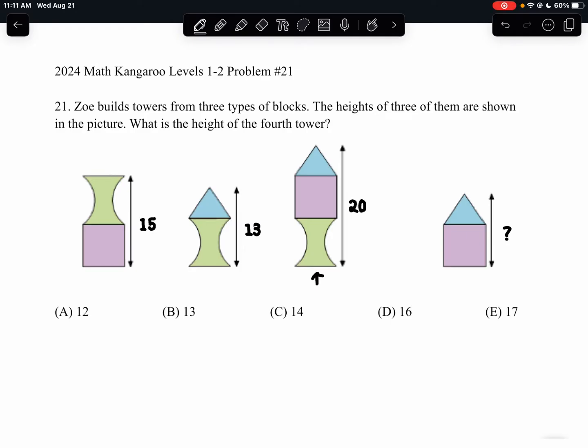For example, if we compare it to the height of the second figure, we see that the difference between these two structures is that one has the purple square and the other one does not. And the difference in their heights is 20 minus 13, which is a difference of 7 units.